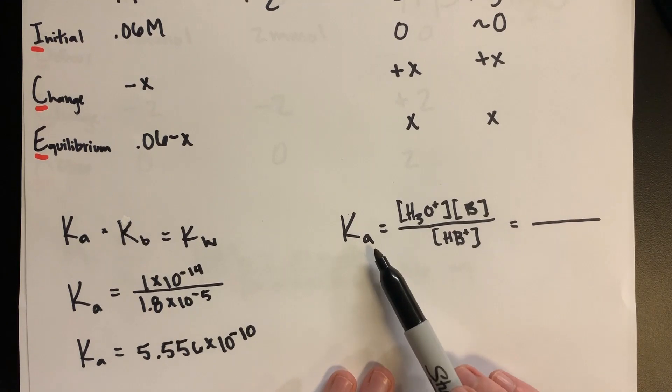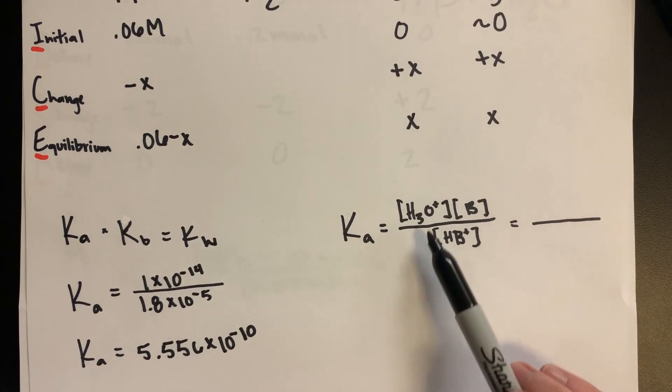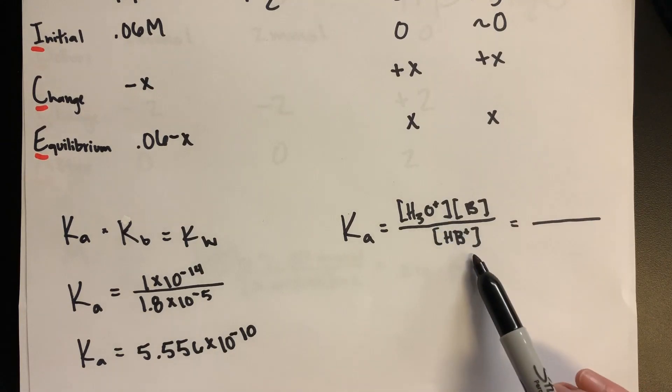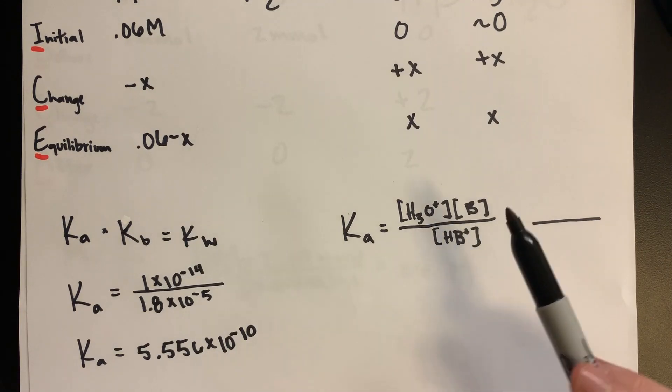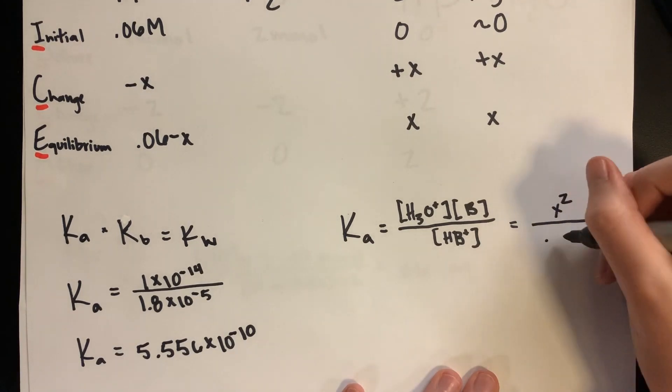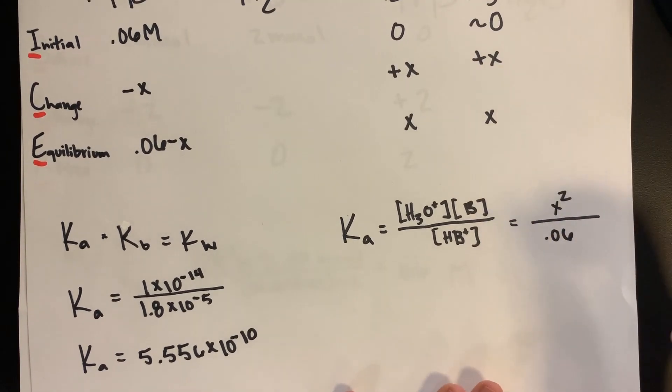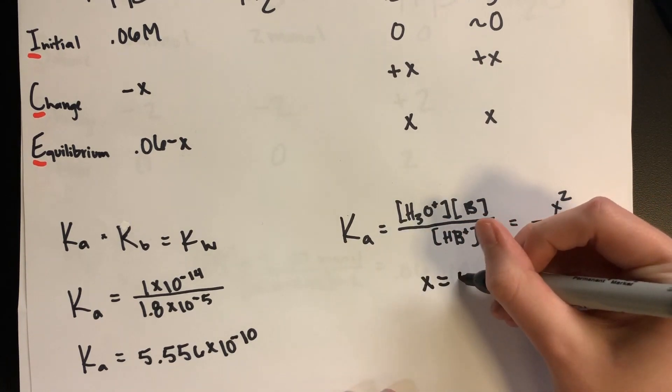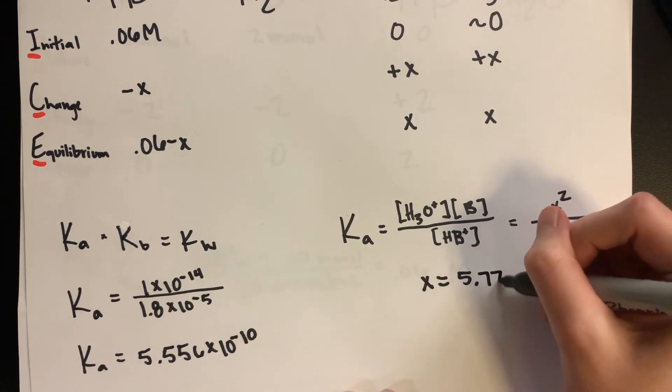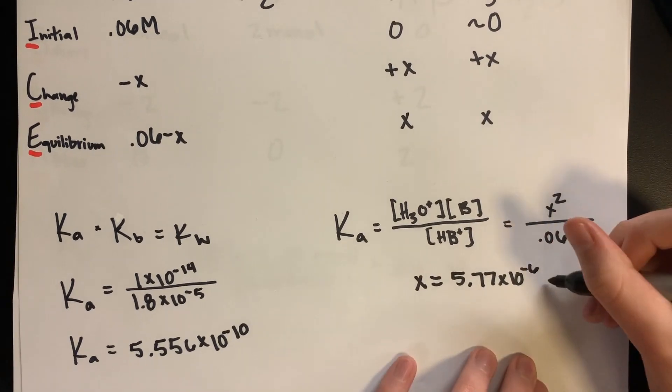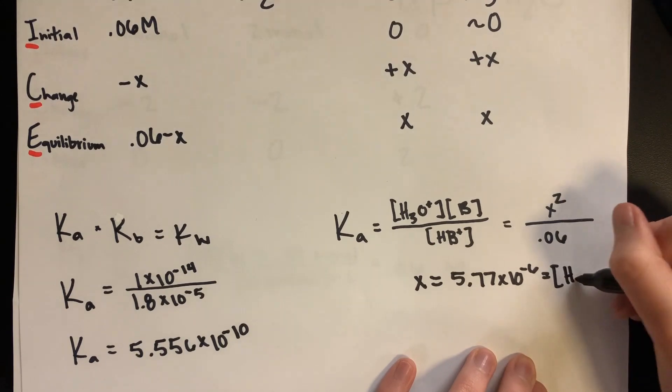Ka is also the concentration, equals the concentration of the products divided by the reactants. Thus, it will be equal to X squared divided by 0.06, and hence, we can calculate out X to be equal to 5.77 times 10 to the negative 6, which is also equal to the hydronium ion concentration.